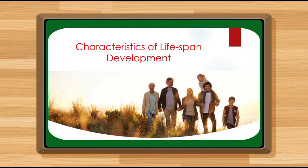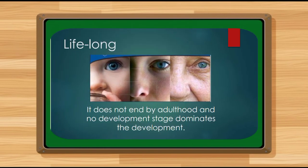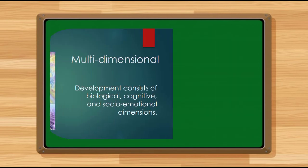We also have the characteristics of lifespan development to explain further. The first characteristic of the lifespan approach is that it is lifelong. Development under the lifespan approach is lifelong. Observing the three images provided — from the child's eye through adulthood to late old age — you can see a balance. This means there is a balance from infancy through late old age.